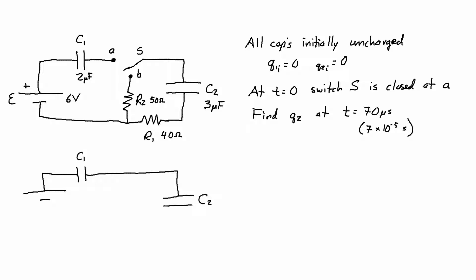When I close the switch at A, the circuit is going to look like this. So notice at this point the current would flow clockwise through the circuit and there would be no current going through R2.